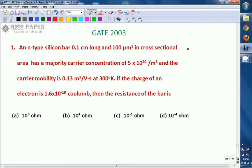An N-type silicon bar 0.1 cm long and 100 µm² in cross-sectional area has a majority carrier concentration of 5×10²⁰ /m³ and the carrier mobility is 0.13 m²/V·s at 300 Kelvin.